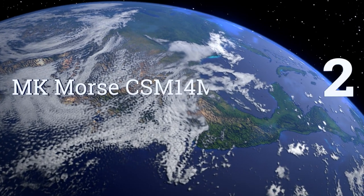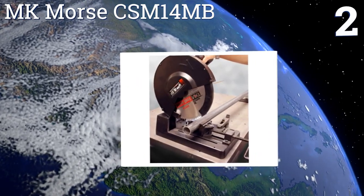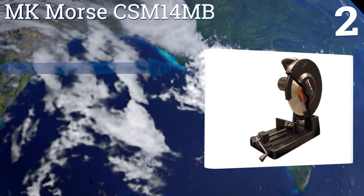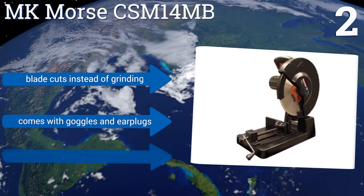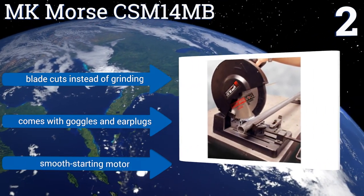At number two, the MK Morse CSM14MB has a low-speed, high-torque 1300 RPM motor to give you a quick, consistent chop through even the toughest of metals. The teeth in the blade dissipate heat, eliminating sparks and leaving your edges cool to the touch. It features a blade that cuts instead of grinding and a smooth-starting motor. It comes with goggles and earplugs.